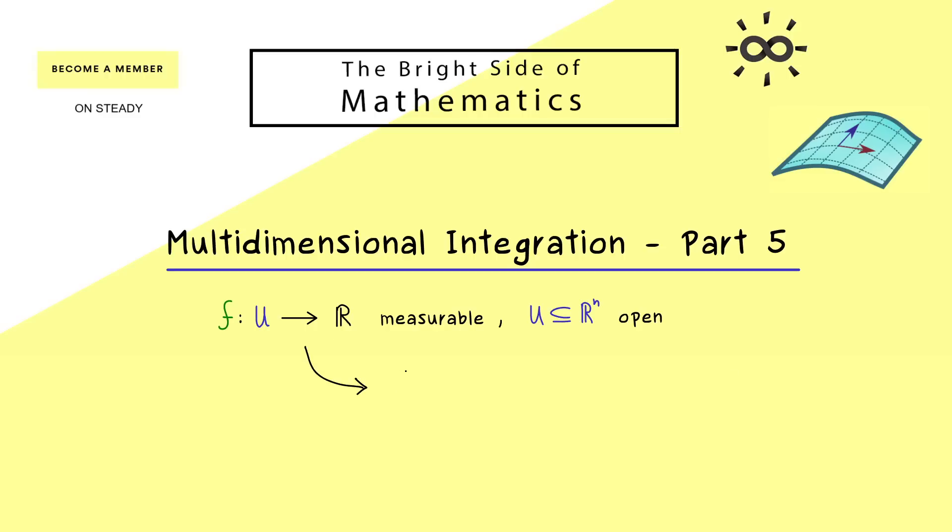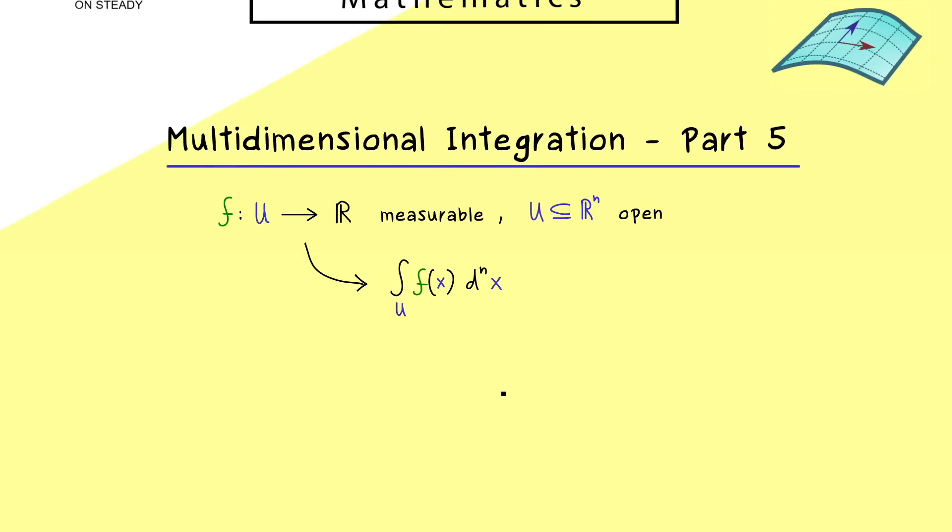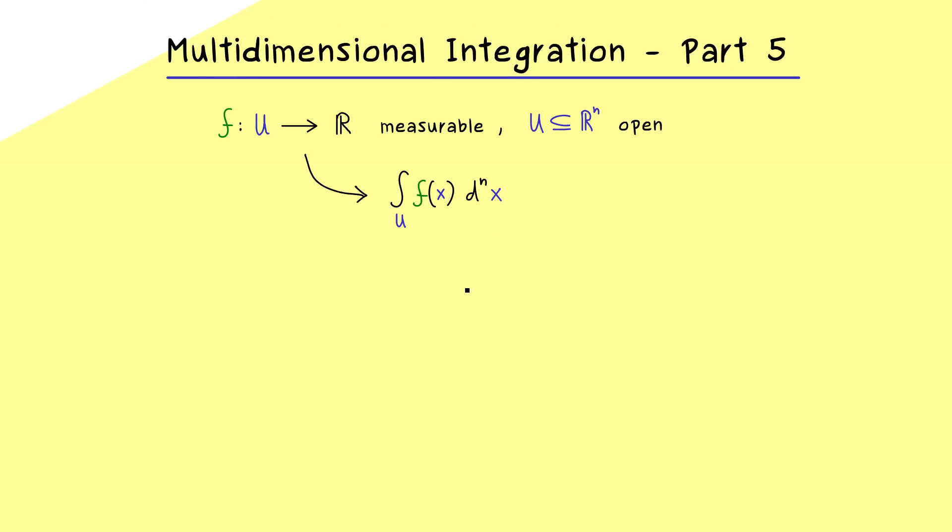However, first let's focus on what we actually want. Namely, we want to solve an integral, the n-dimensional integral of the function f. And you know, one possible notation we chose for that would be integral of f and d^n x inside, which simply means that we have n variables which we put into one vector x. And now the change of variables formula will tell us that we can introduce a new variable but still get out the same integral value in the end.